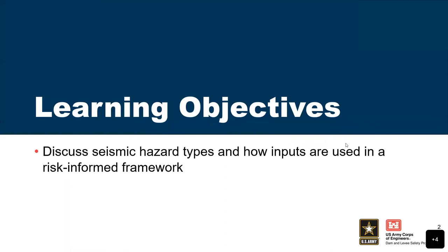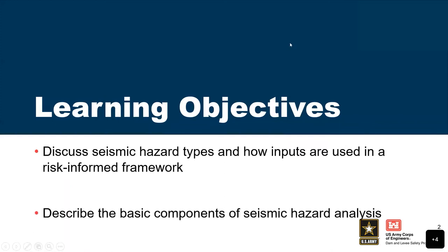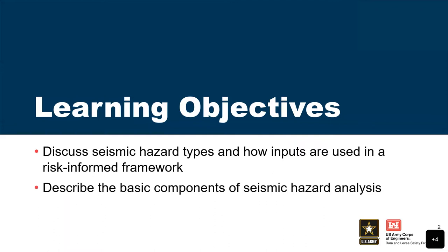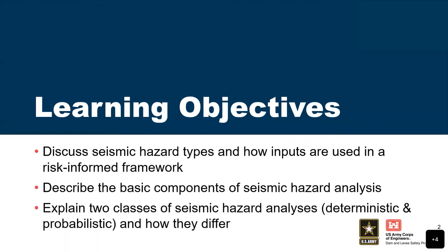Here are our overall learning objectives. We want to discuss seismic hazards — the types — and then how the inputs are used in a risk-informed framework. We'll describe the basic components of seismic hazard analysis, explain the two classes — deterministic and probabilistic — and how they differ. If you get one thing from this lecture, it's understanding the difference between deterministic and probabilistic hazards.